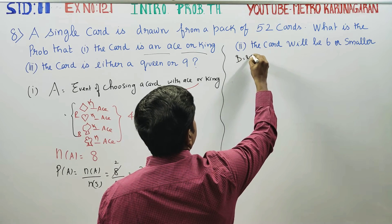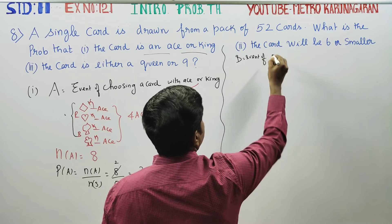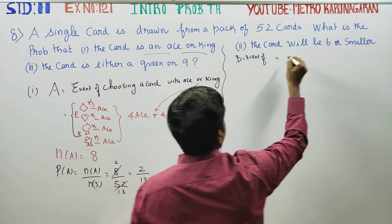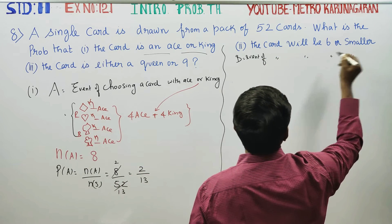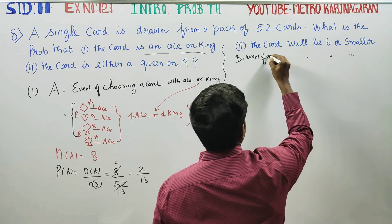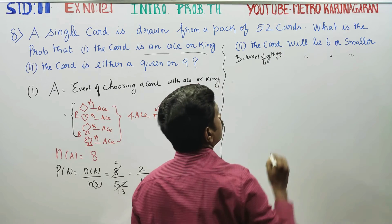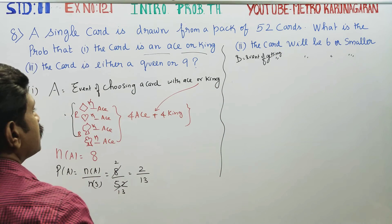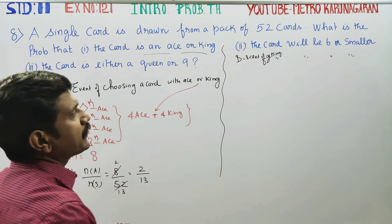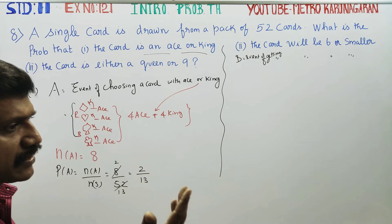Next. B is equal to the event of getting a card with value 6 or smaller — event of choosing or getting a card with value 6 or less.